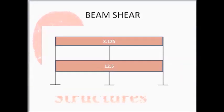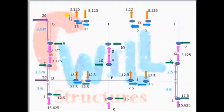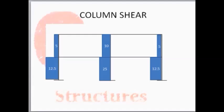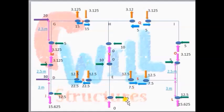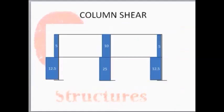Now let's draw the diagram for beam shear. For the first story, beam shear is shown in orange with a value of 3.125 kN, and for the bottom story, beam shear is 12.5 kN. For column shear, shown in green, the values differ for external and internal columns. For the first story they are 5 kN, 10 kN, and 5 kN respectively. For the bottom story they are 12.5 kN, 25 kN, and 12.5 kN respectively.